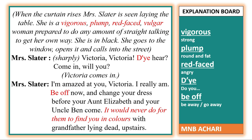When the curtain rises, Mrs. Slater is seen laying the table. She is a vigorous, plump, red-faced, vulgar woman, prepared to do any amount of straight talking to get her own way. She is in black. She goes to the window, opens it, and calls into the street very sharply: 'Victoria! Victoria! Do you hear? Come in!' Victoria comes in.